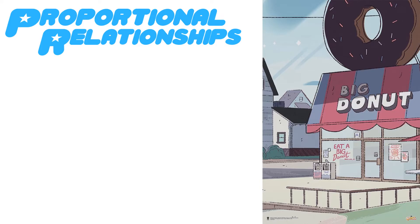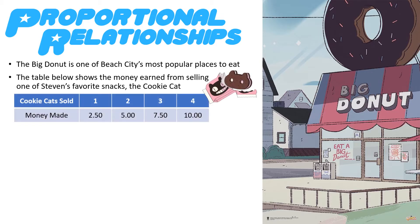We're going to begin here at the Big Donut. The Big Donut is one of Beach City's most popular places to eat, and this table below shows you the money earned from selling one of Steven's favorite snacks, which happens to be the cookie cat. The top row in a table is always going to represent the X values, where the bottom row is always going to represent the Y values.